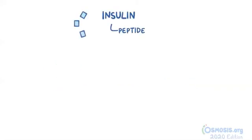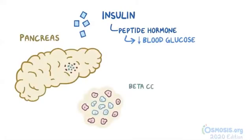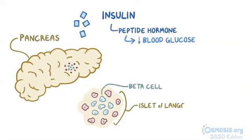Insulin is a type of peptide hormone that reduces the amount of glucose in the blood. It is produced in the pancreas by beta cells. These cells are found within clusters of endocrine cells called the islets of Langerhans, which are distributed across the pancreas.